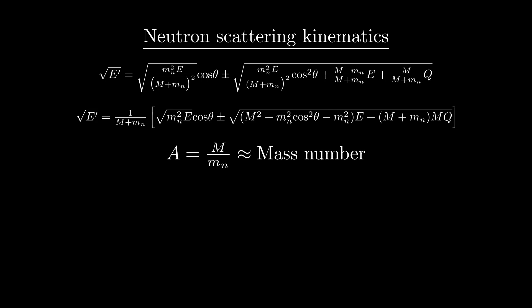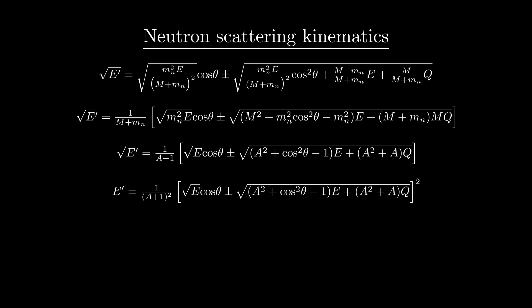If we convert all of our mass values to be in terms of the mass of a neutron, m sub n goes to 1, and big M goes to A. Now we have a formula which is a little easier to digest. It relates the energy of the neutron after scattering to its initial energy, the angle at which it scatters, and the mass number of the nucleus that it scatters off of.